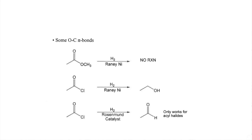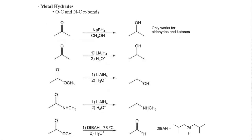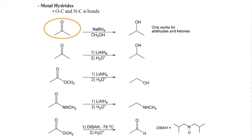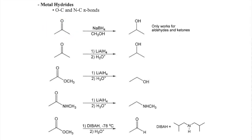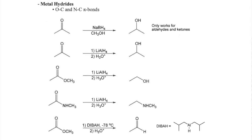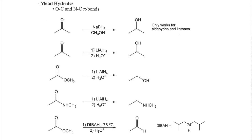The next category of reductions — and again, you've seen these before — are the metal hydride reductions. We've talked about hydride donors before, specifically sodium borohydride and lithium aluminum hydride. You can take a carbonyl like a ketone, treat it with sodium borohydride, and it reduces it down to an alcohol. Sodium borohydride typically only works well on your more reactive carbonyls like aldehydes and ketones.